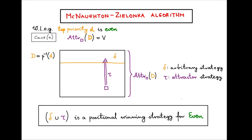We are now ready to prove positional determinacy of parity games. The proof, which can also be seen as a recursive algorithm proposed by McNaughton and popularized by Zielonka, shows that positional winning strategies in parity games not only always exist, but have a very special simple form: they can be explicitly described as a union over a partition of the vertex set of a collection of reachability strategies to various target sets. The inductive proof has three cases.